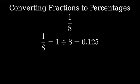Step 1: We need to convert our fraction to a decimal. To do this, we divide the numerator by the denominator. 1 divided by 8 equals 0.125.